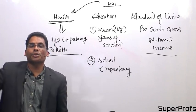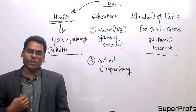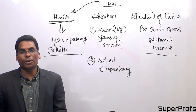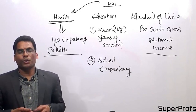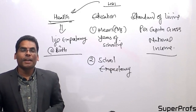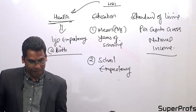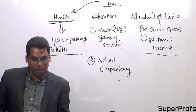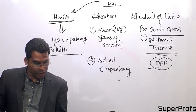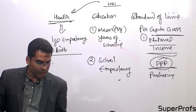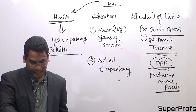School expectancy captures how many years of education a child is expected to complete. The per capita Gross National Income is measured in Purchasing Power Parity — PPP. So to recap: health uses life expectancy at birth, education uses mean years of schooling and school expectancy, and standard of living uses GNI per capita on a PPP basis.